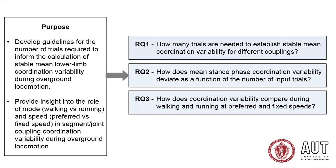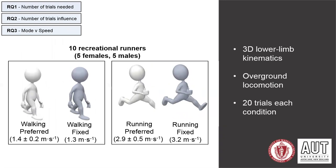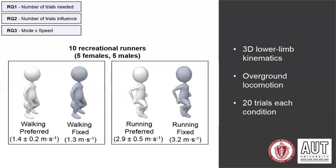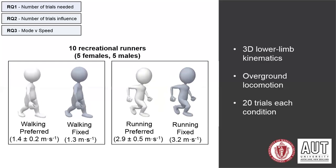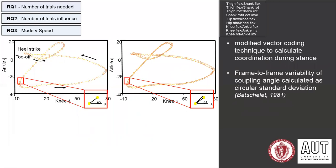The methods used to underpin these research questions consisted of 10 recreational runners performing walking and running trials at fixed and preferred speeds. All trials were performed overground, and participants were asked to perform 20 trials in each condition. During each trial, three-dimensional lower limb kinematics were collected, and the angular data extracted from the kinematics analyses informed angle-angle plots during stance for nine different couplings.